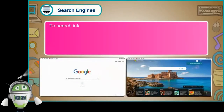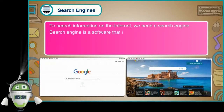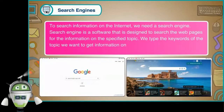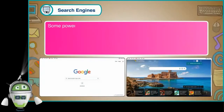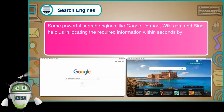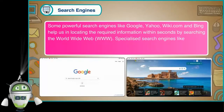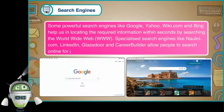Search Engines. To search for information on the internet, we need a search engine. A search engine is software that is designed to search web pages for information on a specified topic. We type the keywords of the topic we want to get information on, and the search engine displays links related to the topic. Some powerful search engines like Google, Yahoo, Wiki.com, and Bing help us locate required information within seconds by searching the World Wide Web. Specialized search engines like Knockery.com, LinkedIn, Glassdoor, and CareerBuilder allow people to search online for jobs.